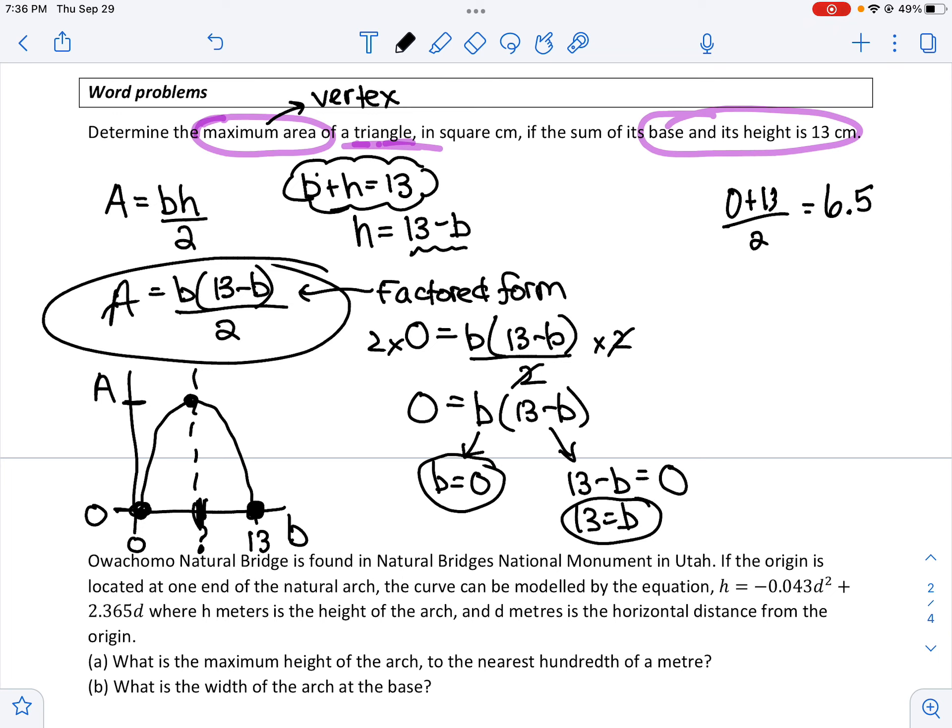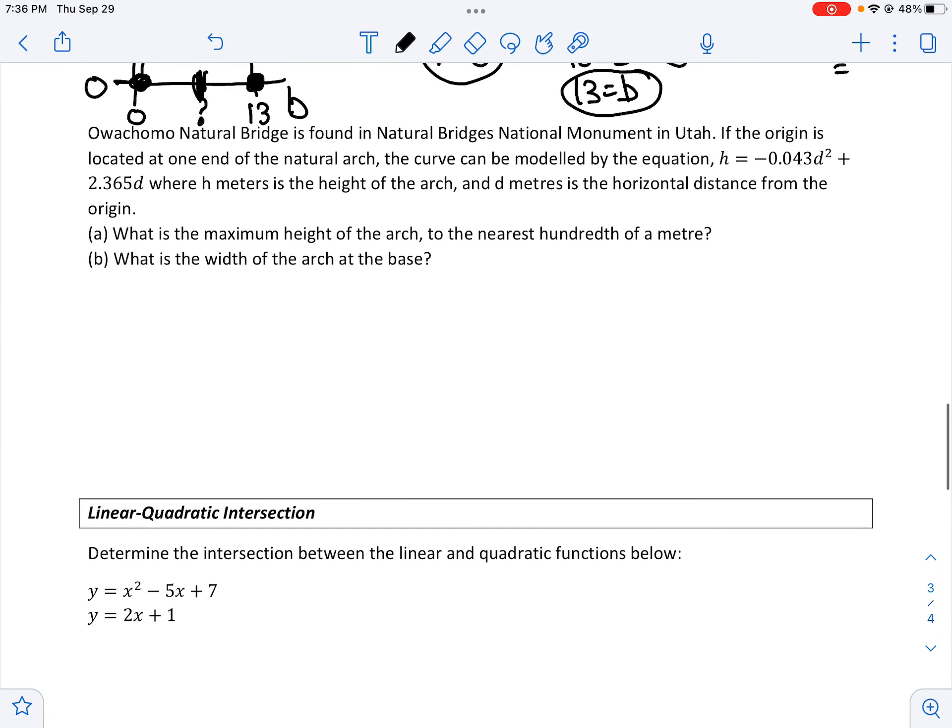So I know that I will get a maximum area when my base is 6.5. So what will my height have to be? Well, my height will be equal to 13 minus the base. So my height will also be 6.5. So I'm going to have a max area when my base and height are 6.5. And my max area will be base times height divided by 2. Whatever that equals will be my max area. Okay, next one.